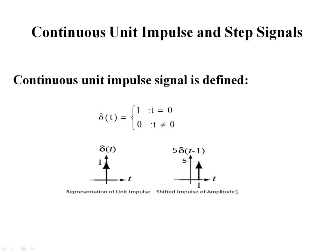Now coming to the main topic of elementary signals. First: continuous unit impulse and the step signal. The continuous unit impulse signal — as the name states, its amplitude is unity. The impulse signal is defined only at one value of time. For t = 0, the value is 1, and for all other values the value remains 0. The graphical representation shows amplitude of 1 at t = 0 and 0 for all other values of time. A shifted version will be dealt with later.